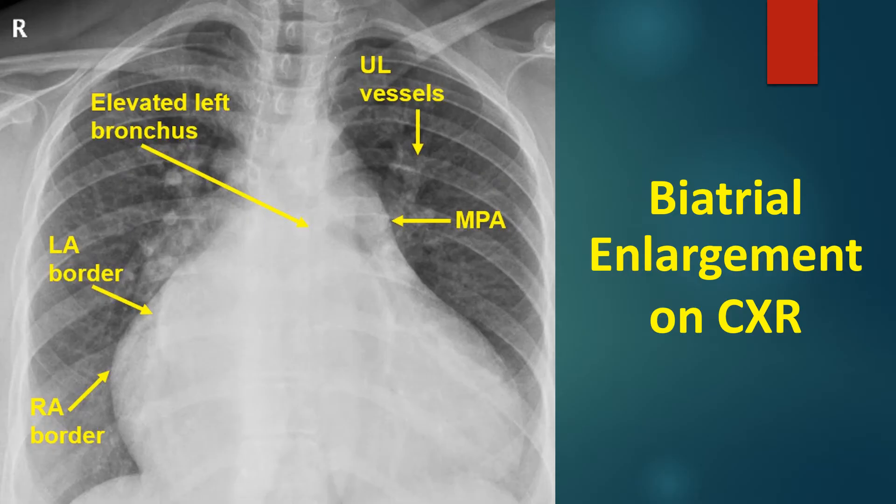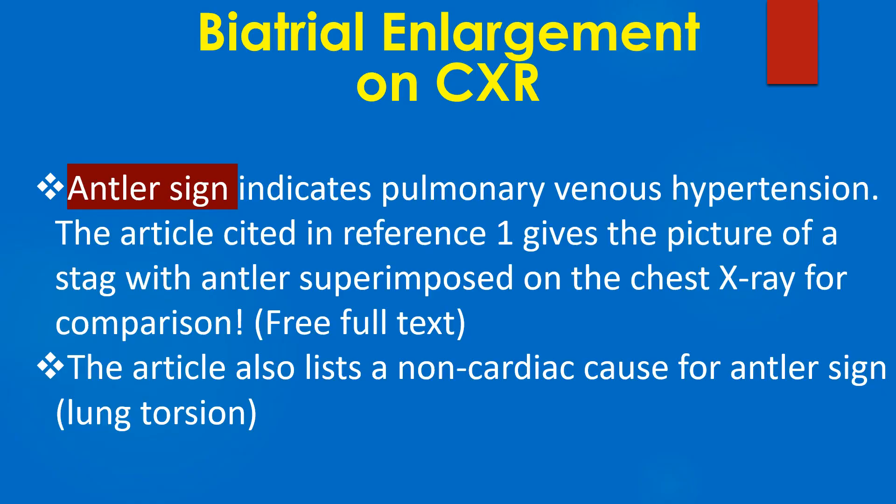The main pulmonary artery shadow is on the left upper cardiac border. The right hilum is prominent due to enlargement of the right pulmonary artery. Upper lobe vessels are prominent, known as the inverted moustache sign, stag's annular sign, and cephalization. The annular sign indicates pulmonary venous hypertension.